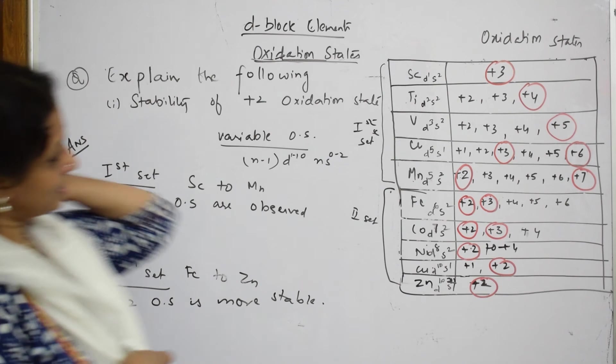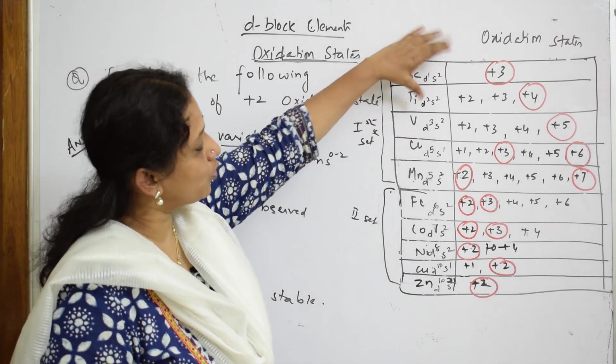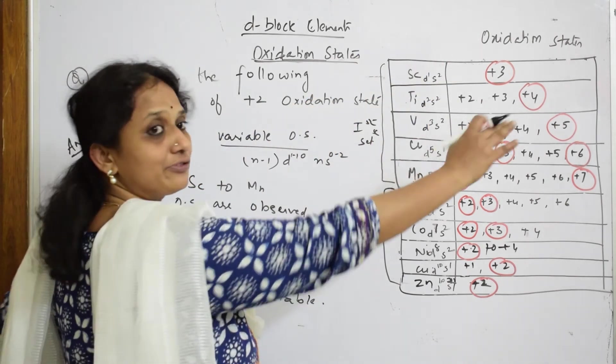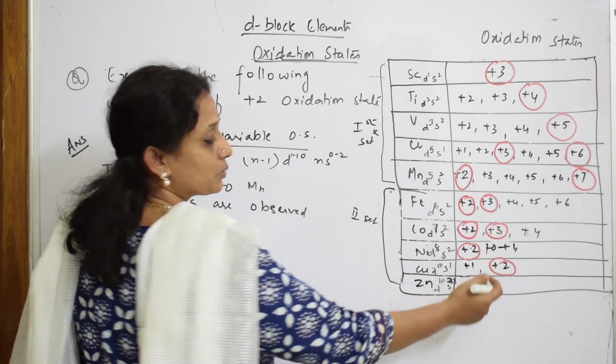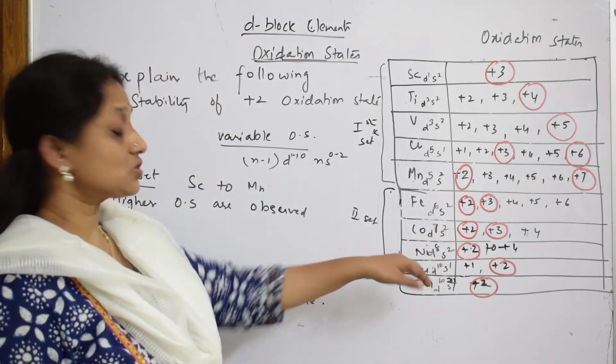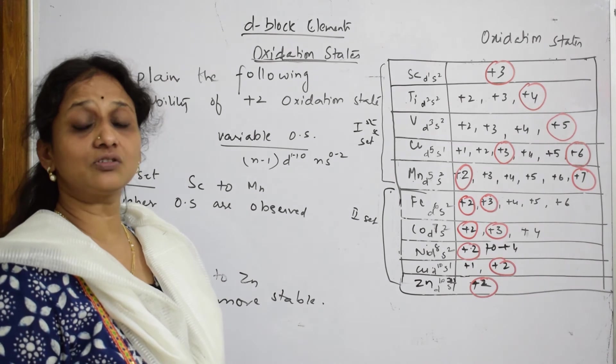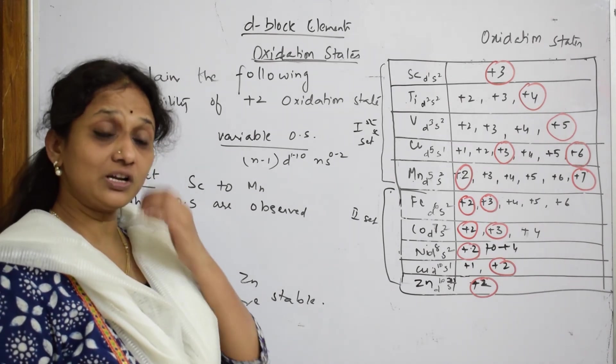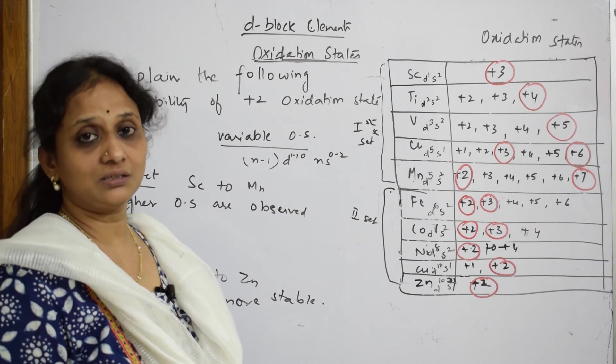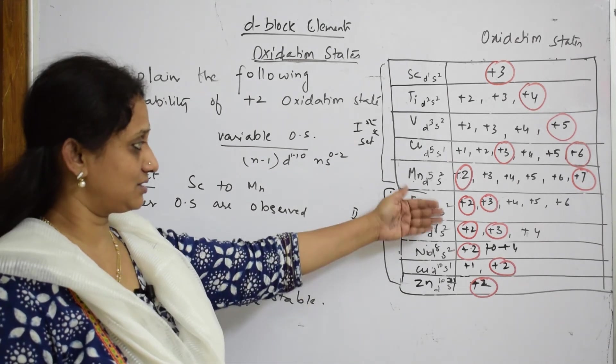Cu2+ is more preferred because of this disproportionation reaction. It gets oxidized and reduced in the same reaction. Now when I come to zinc, it's going to remove two electrons and attain stable d10 configuration. So what am I trying to explain?